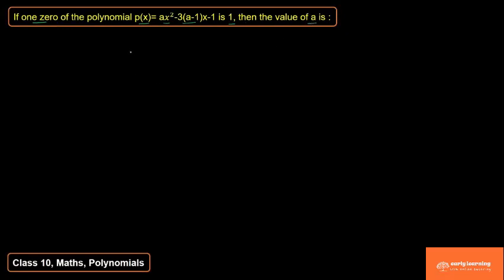The question states that we have a polynomial P(x) given whose zero is 1, so we need to find the value of A.